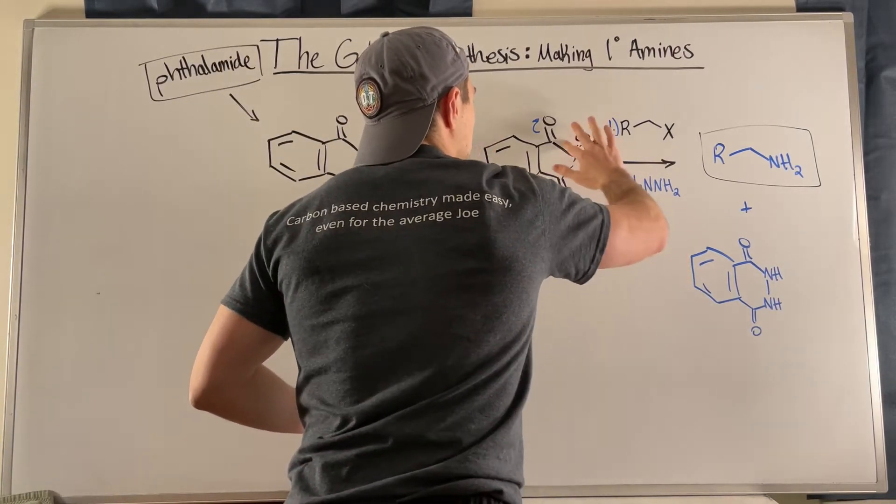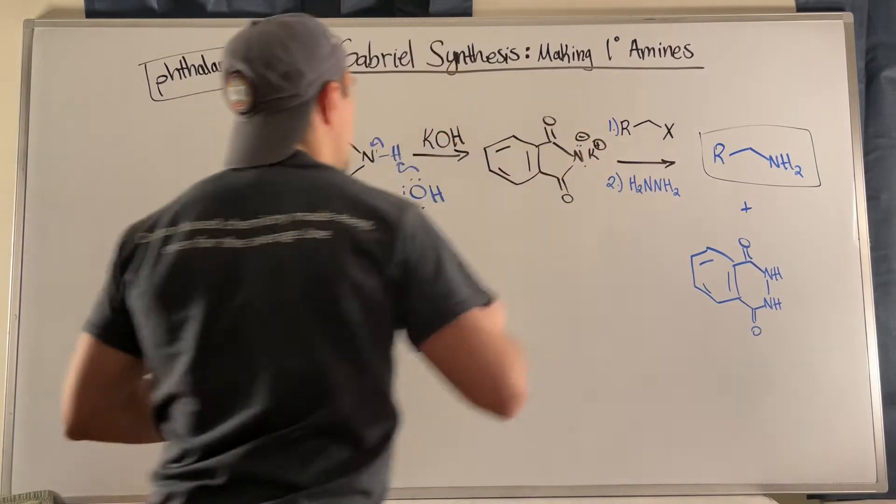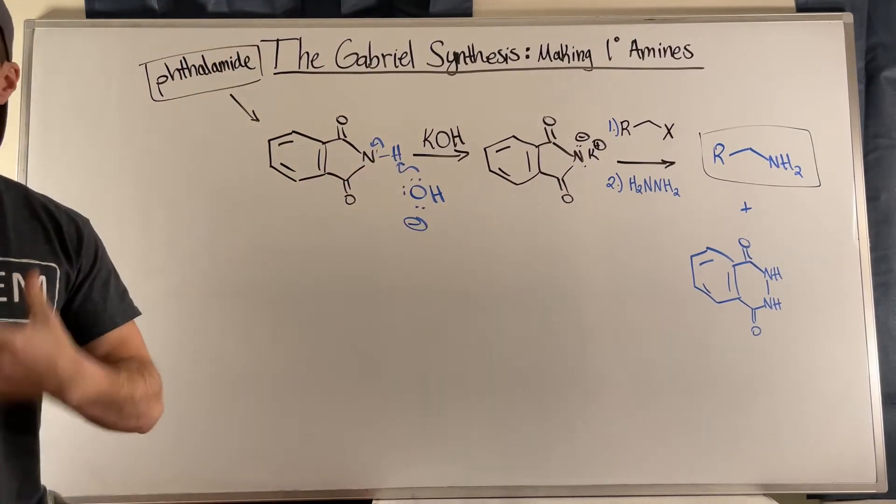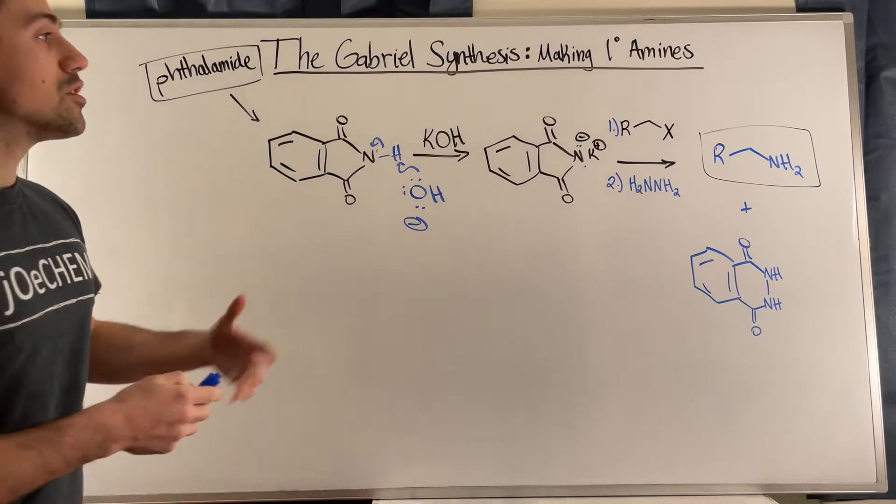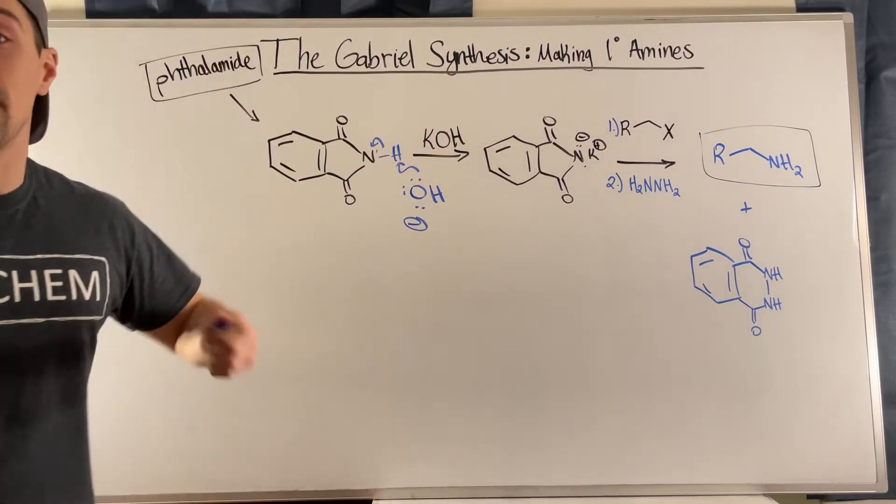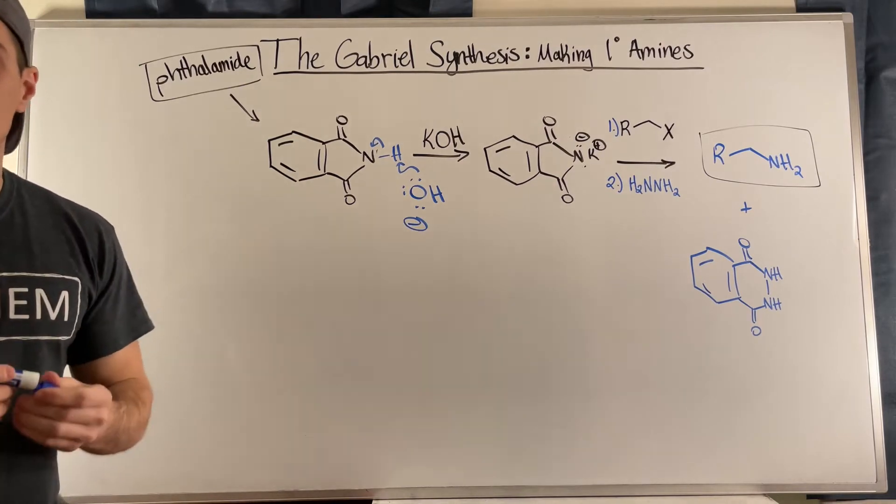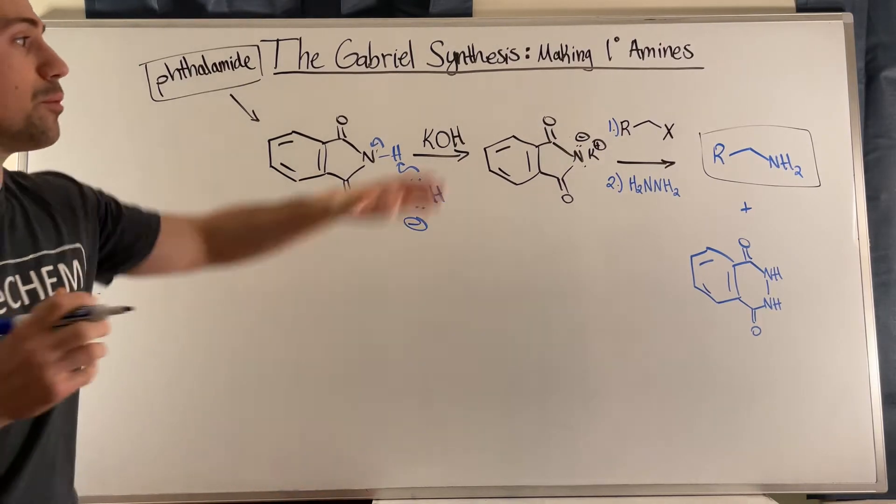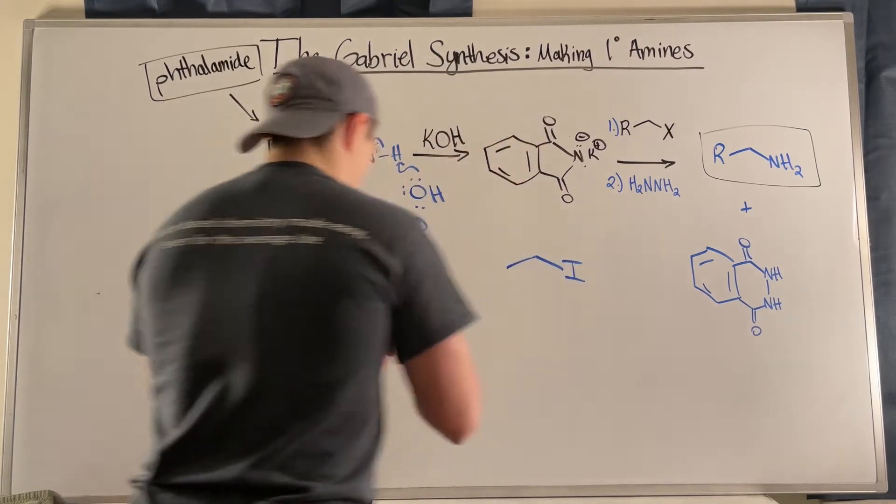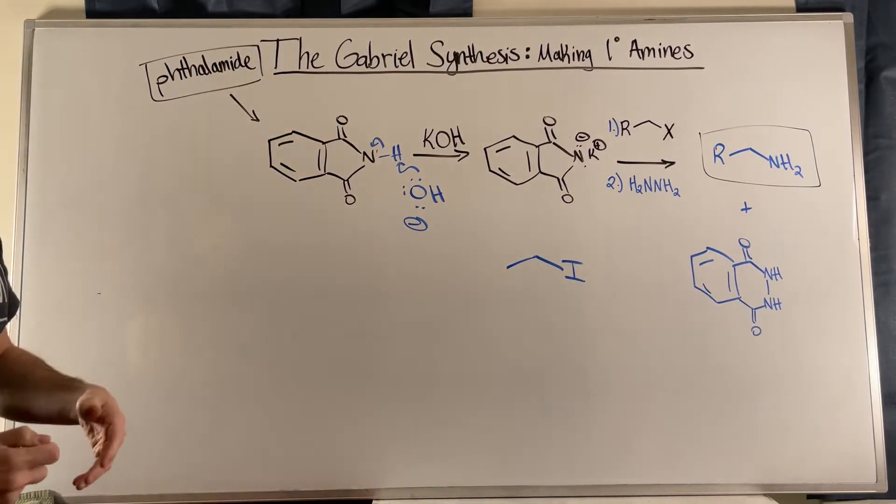So let me erase these arrows. Now, what is great about the ability to take that proton off is you can make a negative charge on that nitrogen, producing a more nucleophilic nitrogen. So what you can do at that point is you can toss in a primary alkyl halide or something with a good leaving group. But here, maybe you're envisioning something like ethyl iodide or something like that, ethyl bromide, whatever.